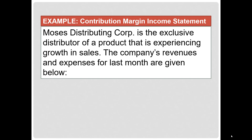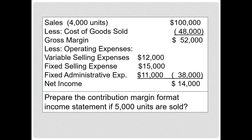Now let's look at an example. Moses Distributing Corporation is the exclusive distributor of a product that is experiencing growth in sales. The company's revenues and expenses for last month are given below. Since this is a distributor and retailer, their cost of goods sold is a purely variable cost. For their income statement: sales of 4,000 units totaled $100,000; cost of goods sold was $48,000; gross margin was $52,000. Operating expenses total $38,000, leaving income of $14,000.